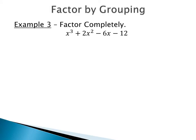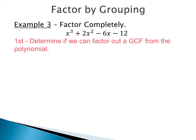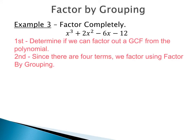Finally, we have a four-term polynomial to factor completely. The first step is always to check for a greatest common factor among all four terms. In this case there is no GCF among all four terms, so we move on. Since there are four terms, we factor by grouping, separating into two groups: x to the third plus 2x squared, and negative 6x minus 12.